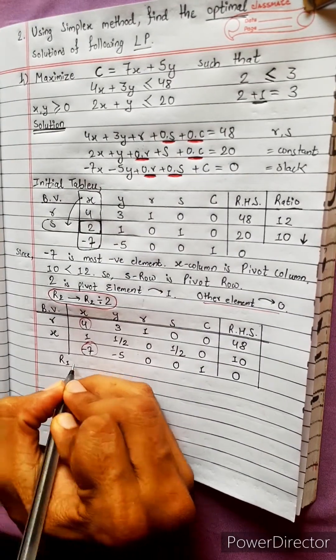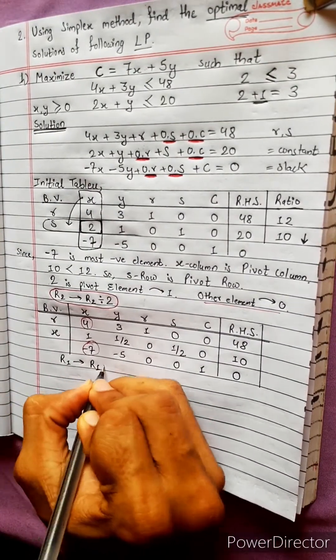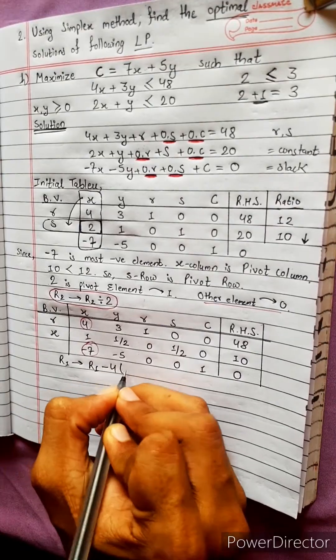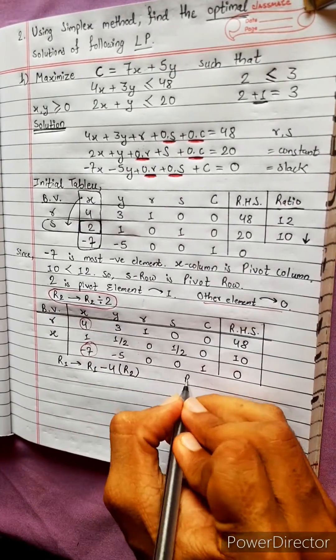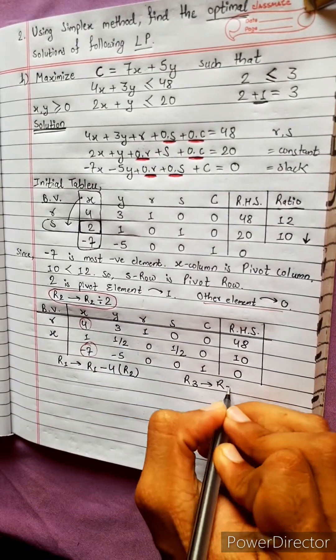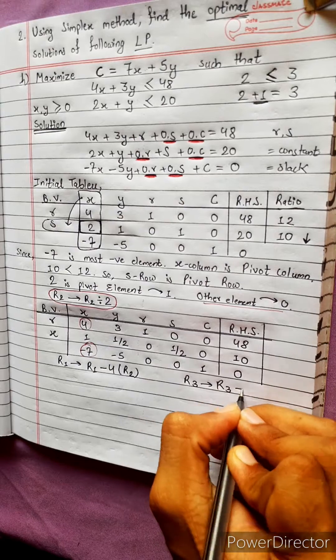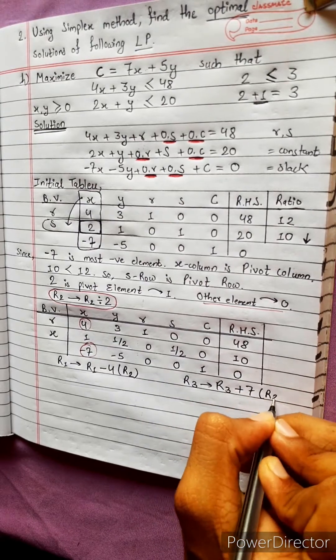R1 changes into R1 minus 4 times R2. Then R3 changes into R3 plus 7 times R2.